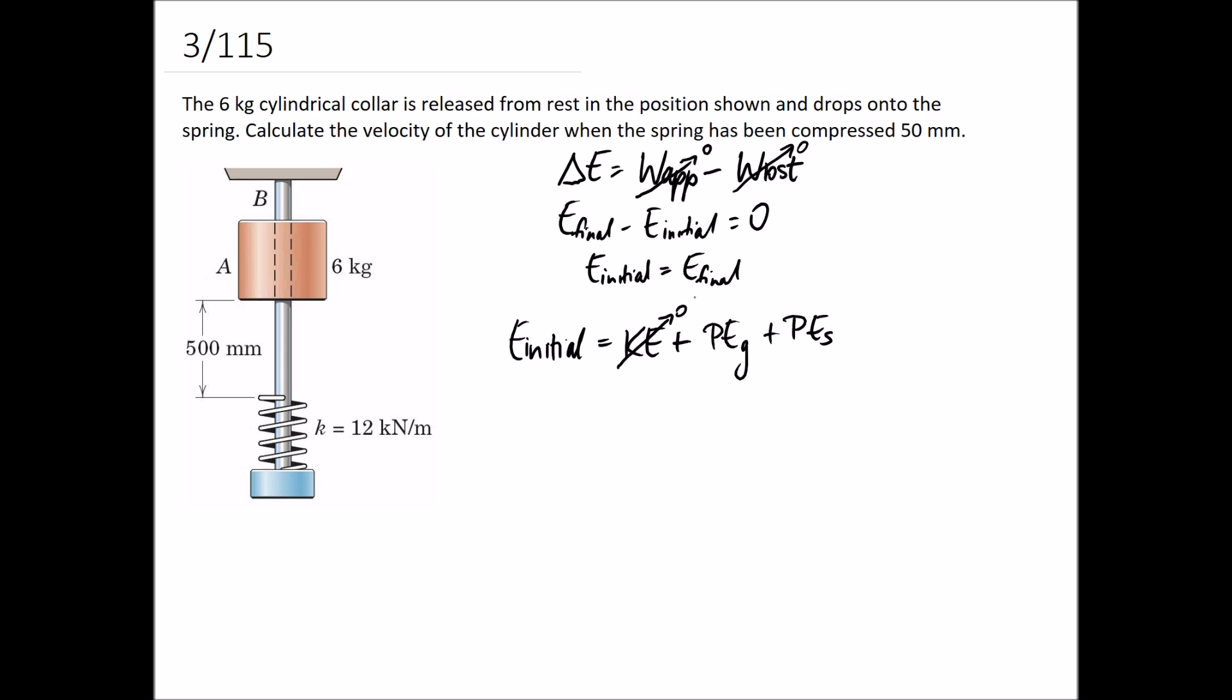Potential energy due to gravity needs to be measured from a reference point, and I'm going to select in line with this spring as being my reference point, my height datum. If I measure the height of the block from this point, it's going to be 500 millimetres above that, so we definitely have potential energy due to gravity, which is equal to mgh.